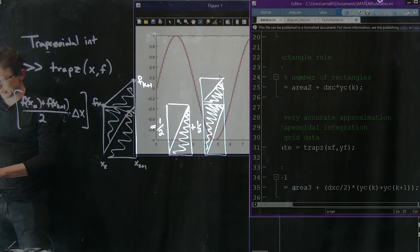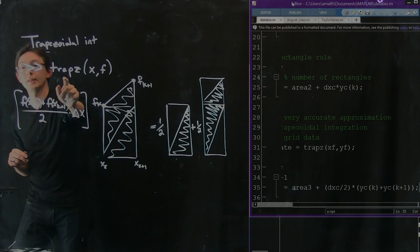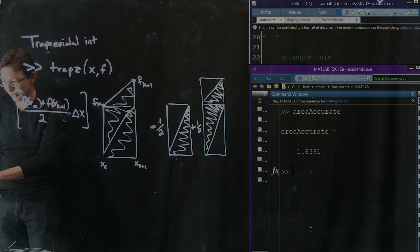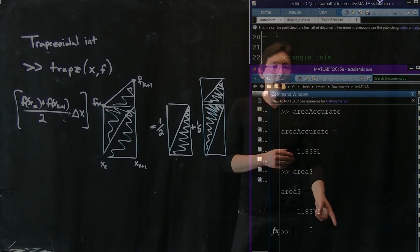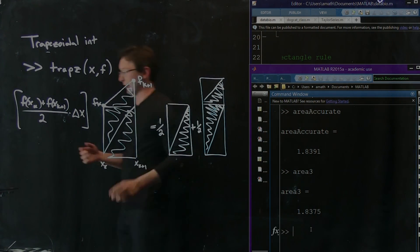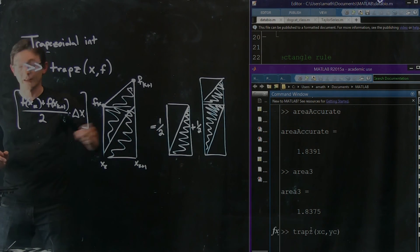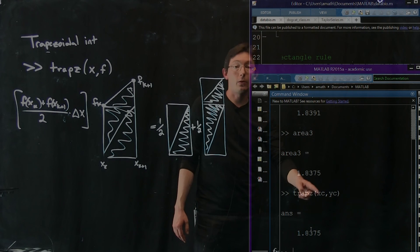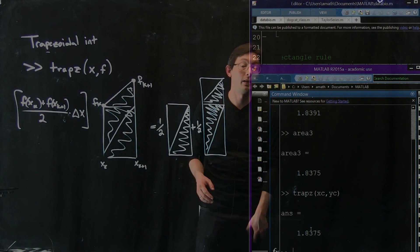The last thing I want to do is just double check that area 3, our by hand trapezoidal integration, is equal to the area you get with trapz. Area accurate and area 3 should be pretty close. They're not exactly equal to each other, but they're very close. It's because I used a different dx. If I did trapz on x-course and y-course, I should get exactly this trapezoidal integration. Perfect. If I use x-course and y-course, trapz gives me exactly the same area as the trapezoidal integration we did by hand ourselves.